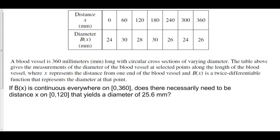What we're asked here is: does there have to be some x value from 0 to 120 such that the diameter has to be 25.6 mm? Well, if b of x is continuous, then from 24 to 30, x has to hit every single function value b of x in between 24 and 30, including 25.6. And we know this from the Intermediate Value Theorem. Since b of x is continuous, b of x has to hit every single value in between 24 and 30 as well.